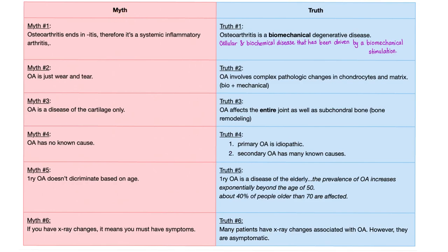There are many myths about osteoarthritis in the culture, so let's debunk them. Myth number one: osteoarthritis ends in '-itis,' therefore it's a systemic inflammatory arthritis. Wrong. Osteoarthritis is a biomechanical degenerative disease — a cellular and biochemical disease driven by biomechanical stimulation. There is an injury, biomechanical stimulation, and a cellular and biochemical disease process: loss of cartilage, growth of bone.